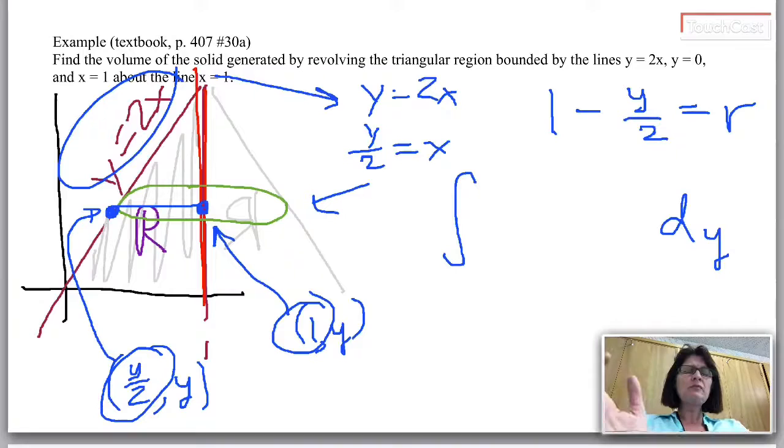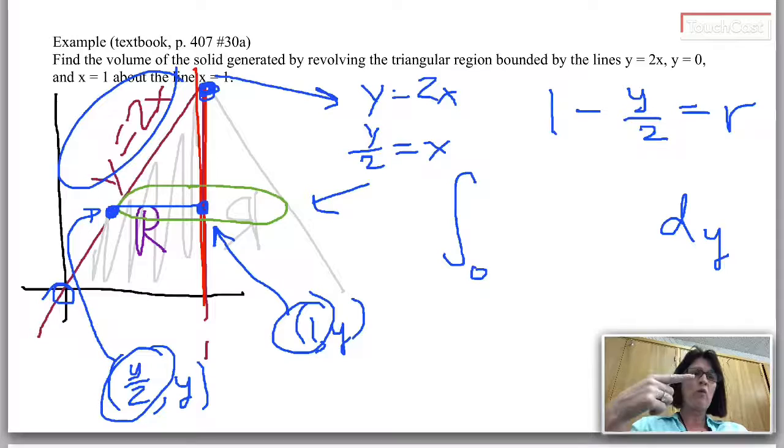So I know I'm going to use dy. So the limits on my integral have to be y values. The lowest down y in my picture is clearly y equals 0. The highest up y value, it's that point. It happens when x equals 1, but I need to figure out the y coordinate there. Notice that the place where x equals 1 and y equals 2x, y is going to equal 2.